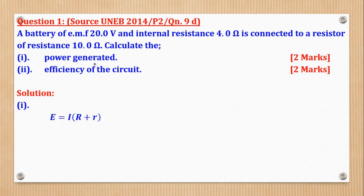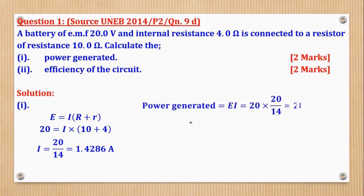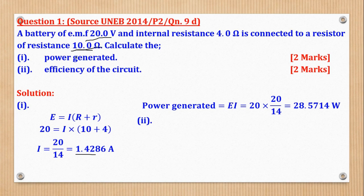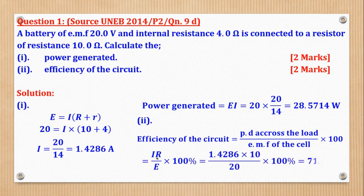To get power generated, remember power generated is EI, so you need the current first. Using I = E / (R + r), I is the only unknown — making it the subject gives the current. Then power generated = EI; substitute to get the value. For efficiency, use efficiency = (PD across load / EMF) × 100%. PD = IR, so substitute for I, R, and E to give the efficiency answer.